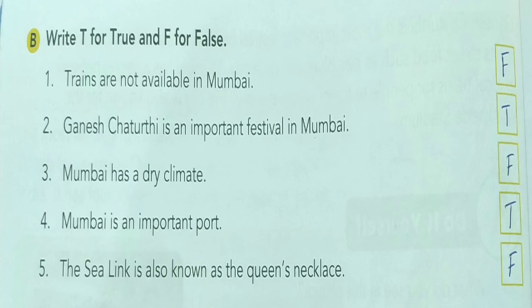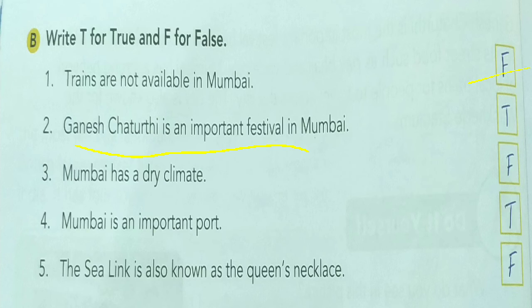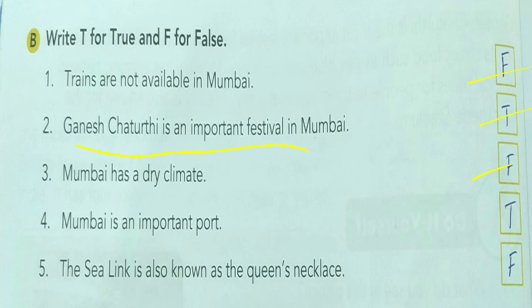True or False. First: Trains are not available in Mumbai — False, because the metro is available in Mumbai. Second: Ganesh Chaturthi is an important festival in Mumbai — True. Third: Mumbai has a dry climate — False; Mumbai has a wet or humid climate. Fourth: Mumbai is an important port — True.